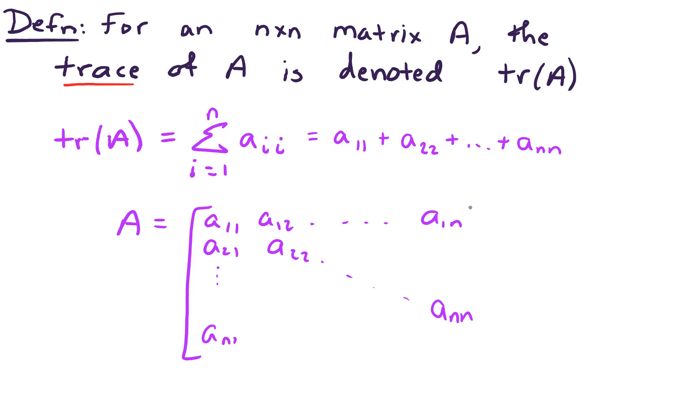What we find is that the trace is simply the sum of elements along the main diagonal. So the trace of A is the sum of entries on the main diagonal.